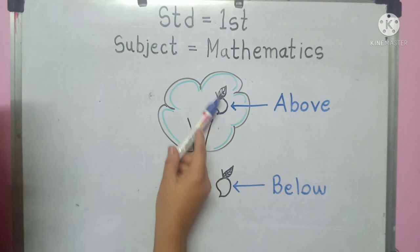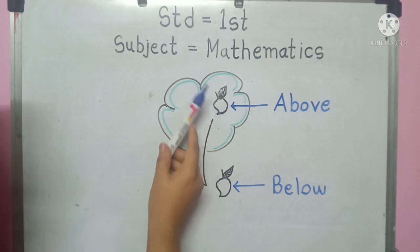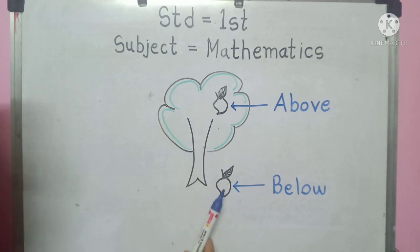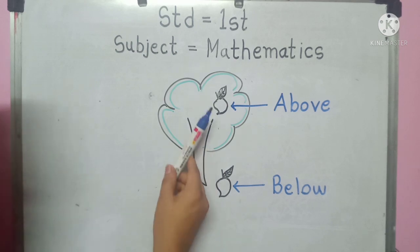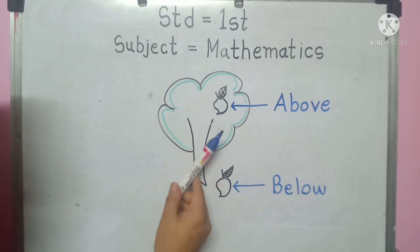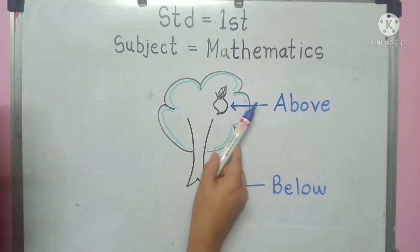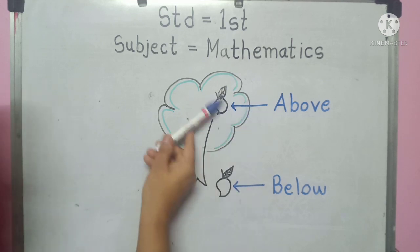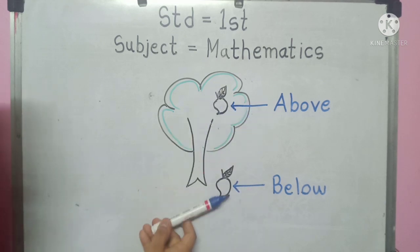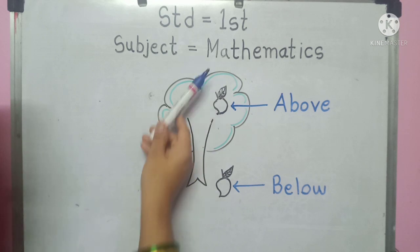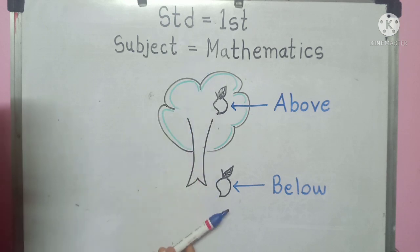The mango is above the tree, and this mango is above the tree, and this mango is below the tree. And this mango is above... below. Above, below.